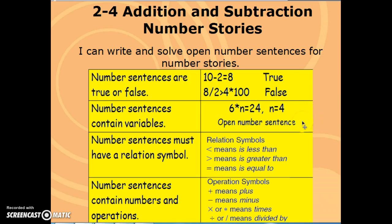Open number sentences contain variables. A variable is just a letter that is put in place. Sometimes you might have a box inside of your equation that you need to figure out what number is represented by that box or that letter. And that's your variable.